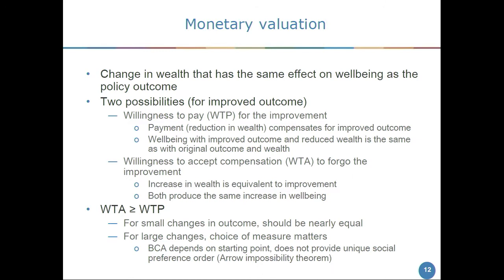Monetary valuation is the change in wealth that has the same effect on well-being as the change in outcome in question. For an improved outcome, there are at least two possibilities: willingness to pay for the improvement — the reduction in wealth that exactly compensates for the change, leaving the person no better or worse off — and willingness to accept compensation to forgo the improvement — the increase in wealth instead of the improved outcome that leads to the same increase in well-being. Willingness to accept will be at least as large as willingness to pay. For very small changes they're close; for big differences in outcome, they are not close, so the choice of measure matters.